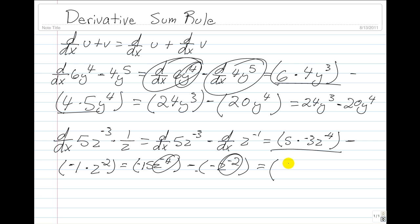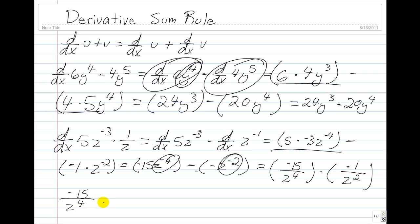Since we have negative exponents, we bring them down and get negative 15 over z to the 4th minus negative 1 over z squared. Our final answer is negative 15 over z to the 4th plus 1 over z squared. We get the plus sign when we distribute the minus sign.